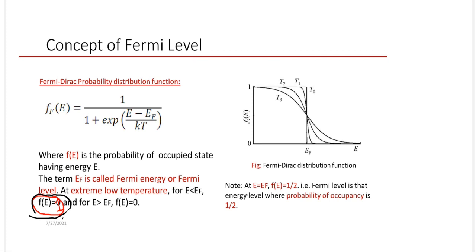In the first class we already discussed the formation of n-type and p-type semiconductors. Today we are going to discuss the concept of Fermi level. The Fermi level is basically defined by a probability distribution function called the Fermi-Dirac probability distribution function, denoted as F(E) = 1 / (1 + e^((E - Ef) / kT)).